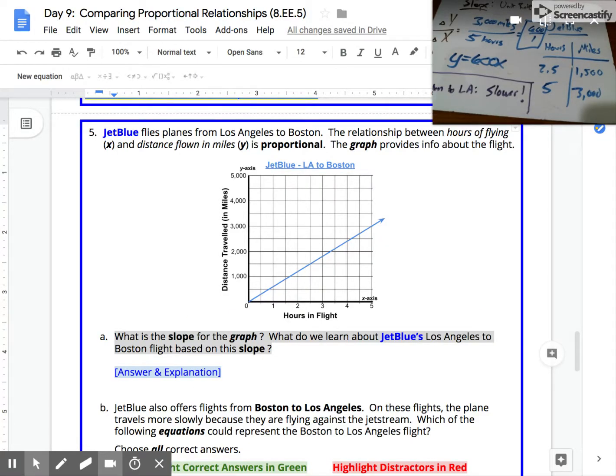So as we circle back to part A, what is the slope for the graph? Again, we learned that the slope was 600 miles for every 1 hour. And that told us the speed for JetBlue's L.A. to Boston flight.